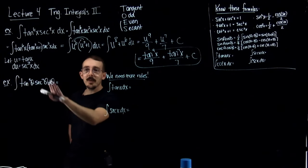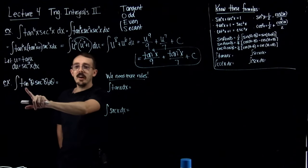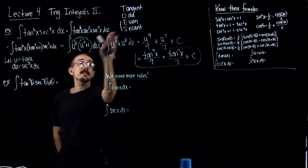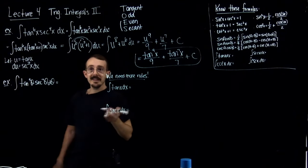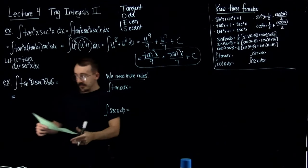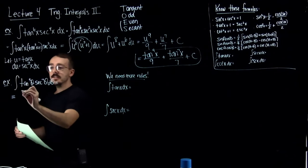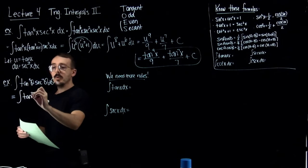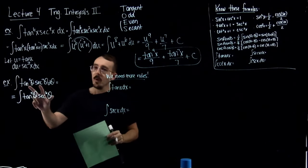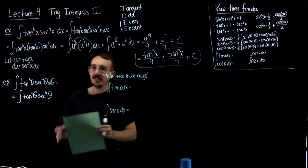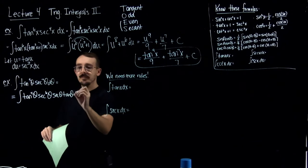I'm going to show you an example where tangent is odd and secant is odd — so the even secant condition doesn't apply, but tangent being odd means we can still do this. I'm going to turn this into tangent to the fourth times secant to the sixth, and then grab one of each: secant theta tangent theta dtheta off to the side, because secant tangent is the derivative of secant.